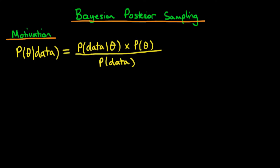In this video I want to speak about the motivation behind Bayesian posterior sampling and also explain some of the intuition behind the concept. Starting off with the motivation, the goal of Bayesian inference in general is to gain insight into the posterior distribution over the unknown parameters within the model.